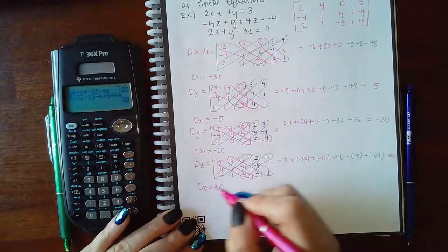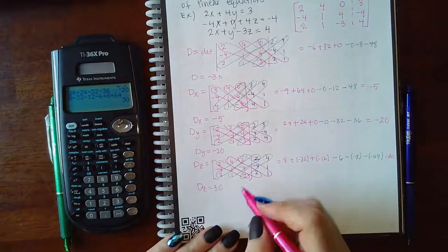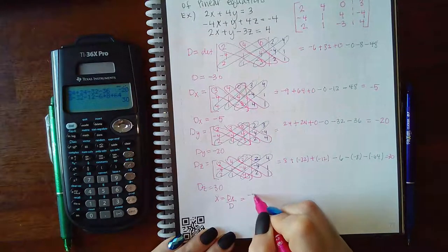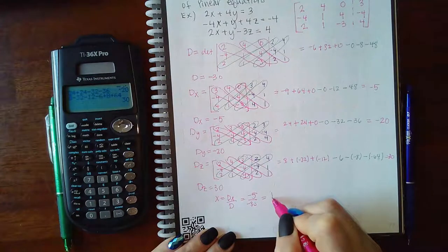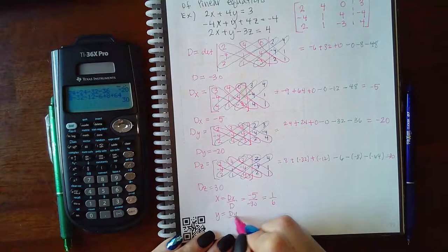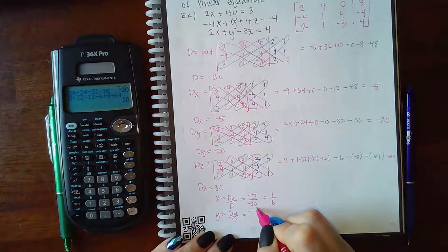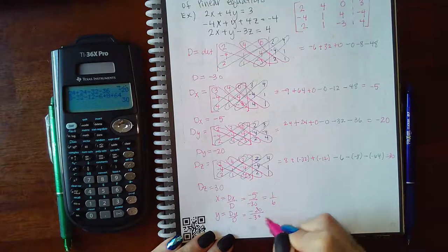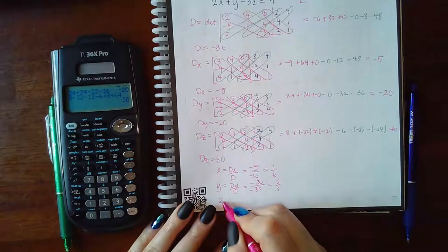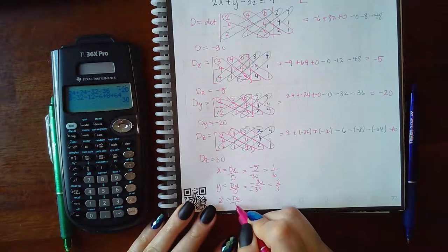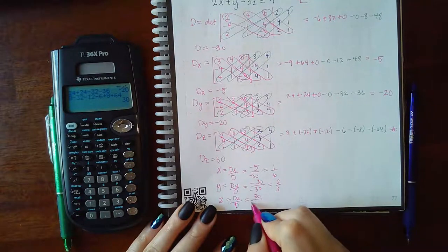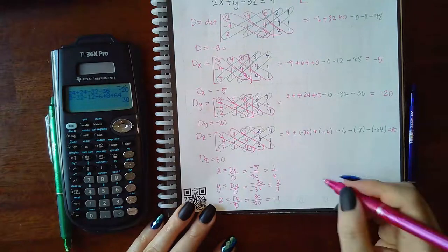So that means Z equals 30. I'm sorry, DZ equals 30. So how do I figure out what X, Y, and Z is? X is DX over D. So negative 5 over negative 30, which reduces to a positive 1/6. Y is DY over D, which is negative 20 over 30, which reduces down to a positive 2/3. Z is DZ over D, which is 30 over negative 30, which is equal to negative 1.